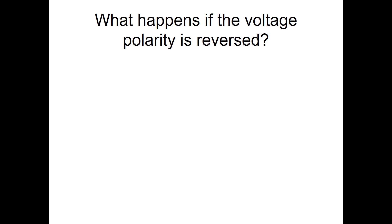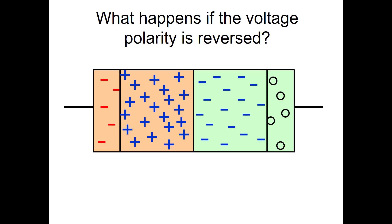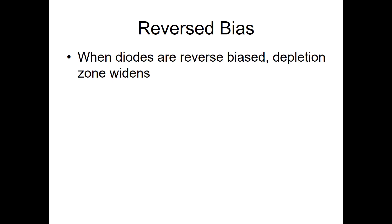What happens if you reverse the polarity? The depletion zone widens out. That's because the electrons are attracted to the positive, the holes attracted to the negative. It widens out that depletion zone, leaving behind the ions and widening out that depletion zone. So when diodes are reversed biased, the depletion zone gets wider. That becomes harder and harder for charges to cross that depletion zone.